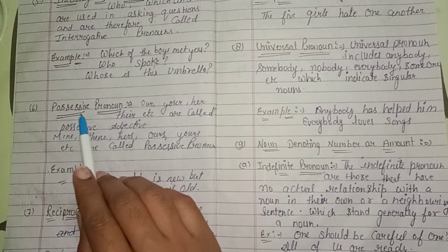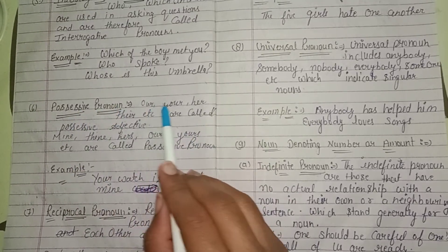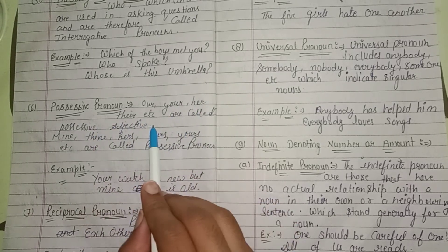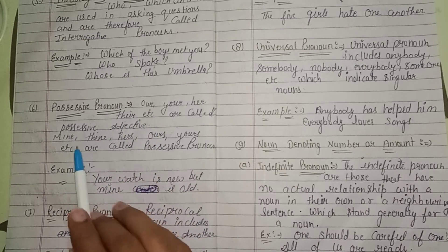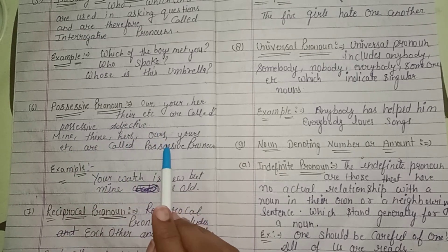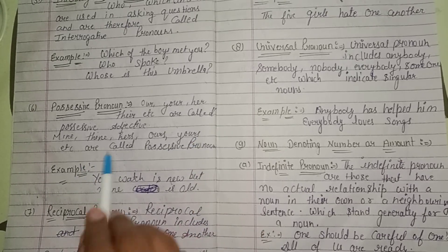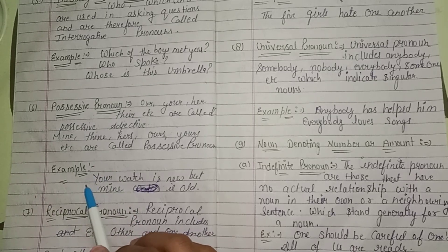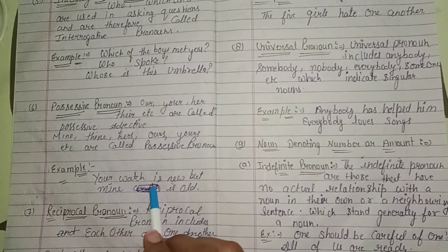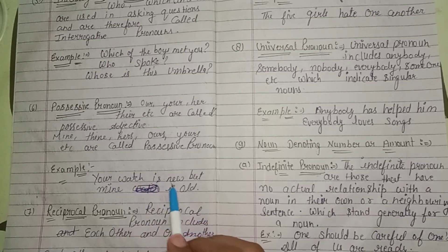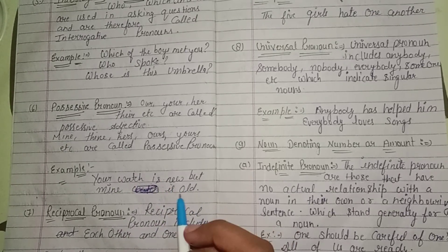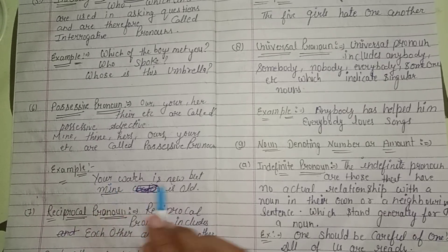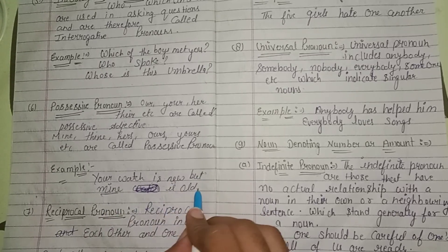Sixth is possessive pronoun. Our, your, her, their, etc. are called possessive adjectives. Mine, hers, ours, yours, etc. are called possessive pronouns. For example: your watch is new but mine is old. Here 'mine' is the possessive pronoun, because your watch is not mine — mine is old.